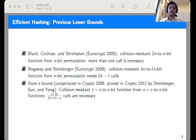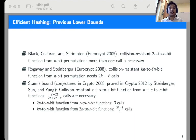In 2008, Stam refined the above bound and conjectured that any collision-resistant t+s to s-bit function from n+c to n-bit function requires (s + 2t)/(2n + 2c - s) calls. In concrete terms, Stam's bound implies to construct 2n to n-bit function from n to n-bit functions, 3 calls are necessary. Similarly, to construct kn to n-bit function from 2n to n-bit functions, (2k-1)/3 many calls are necessary.